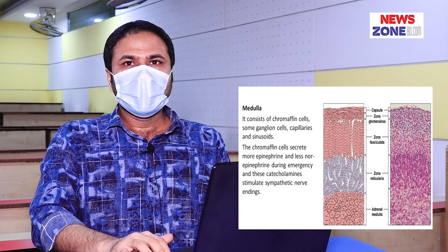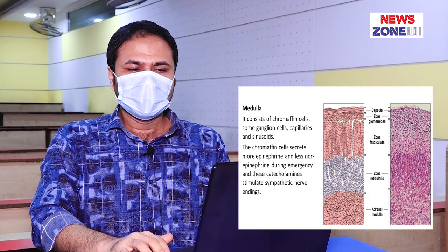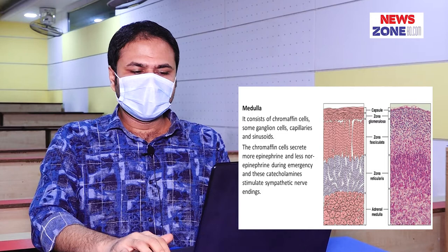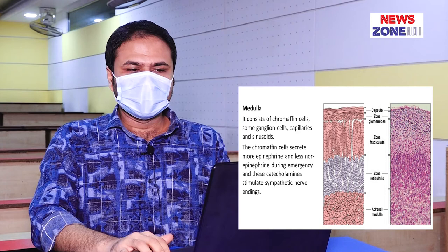Medulla of the suprarenal gland. The medulla consists of chromaffin cells, some ganglion cells, capillaries, and sinusoids. The chromaffin cells secrete epinephrine and norepinephrine during emergency situations, and these catecholamines stimulate sympathetic nerve endings.